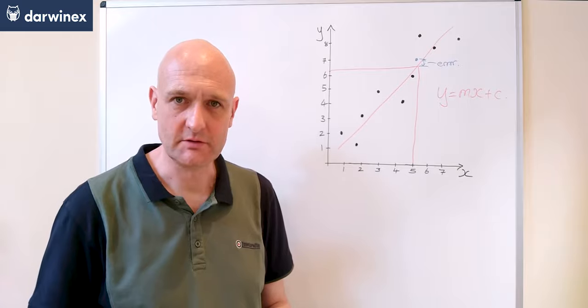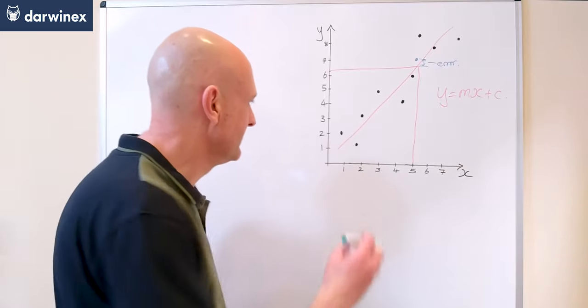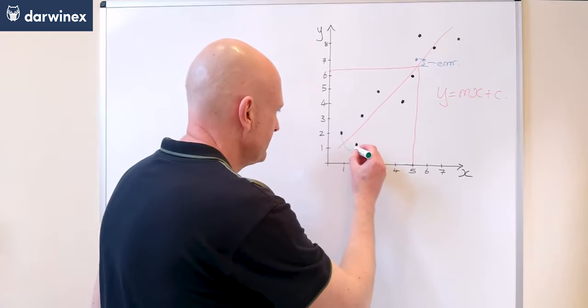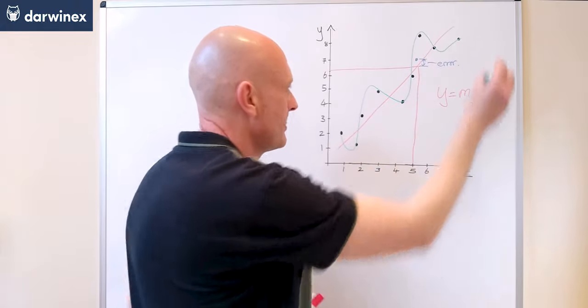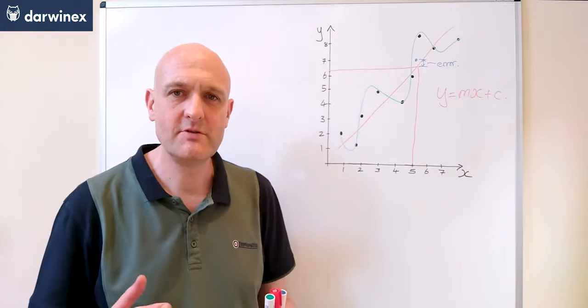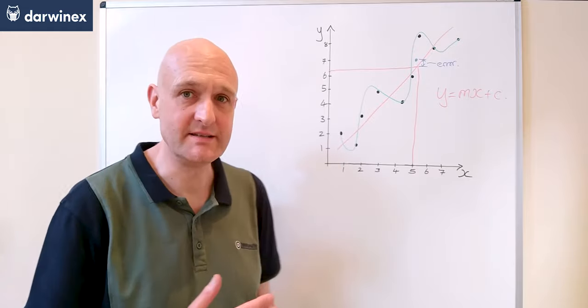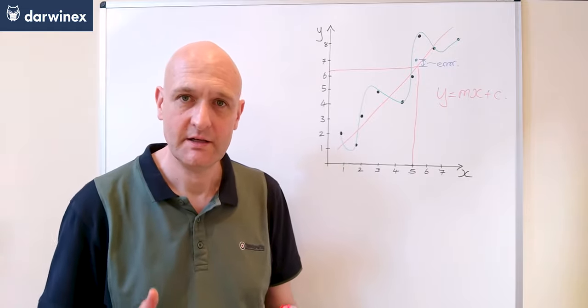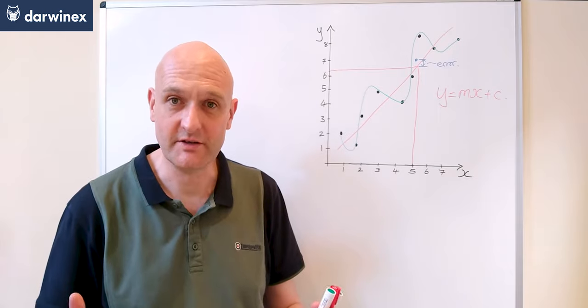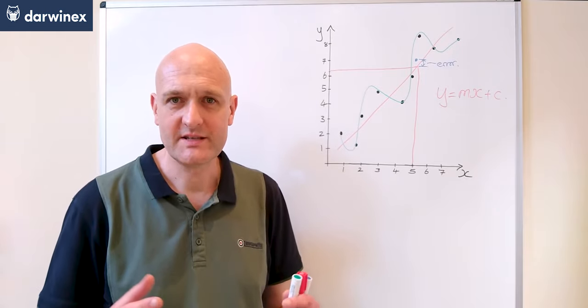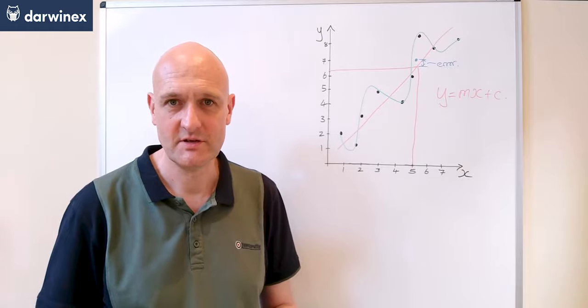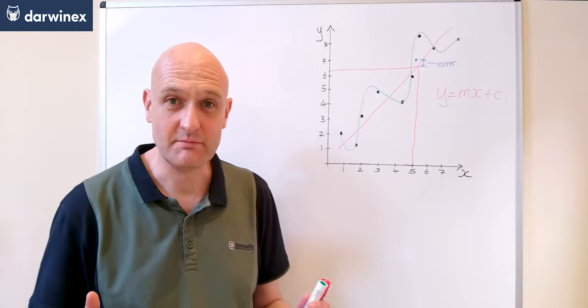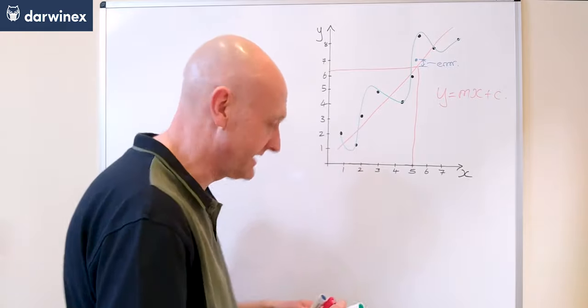Now what does an overfitted model look like? Well, it's something like this. Note how the model fits the past data really, really well—and these overfitted models tend to do that. But to model this algebraically, we need a lot more than just two parameters. So this relationship might be modeled something more like this.